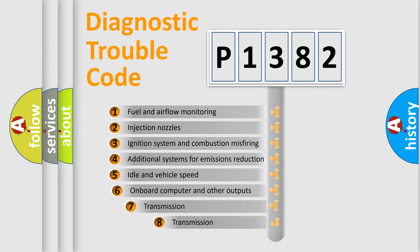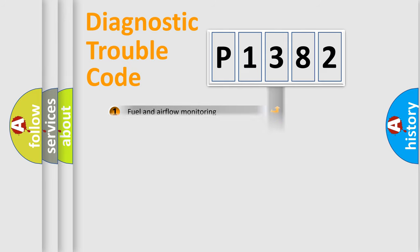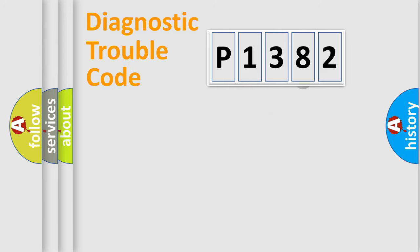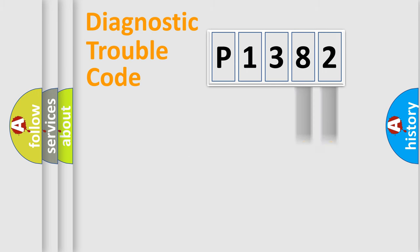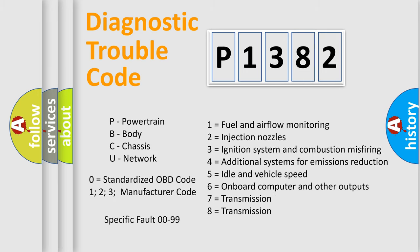The third character specifies a subset of errors. The distribution shown is valid only for the standardized DTC code. Only the last two characters define the specific fault of the group. This division is valid only if the second character code is expressed by the number zero.